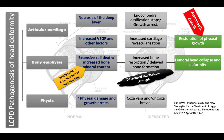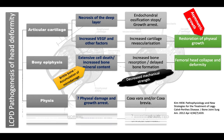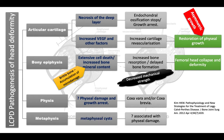At the level of the physis: due to insufficiency in the blood supply, there will be physeal damage and growth arrest, causing coxa vara and coxa brevia. At the metaphysis, there are metaphyseal cysts whose exact pathogenesis is not known but are associated with physeal damage. Femoral head deformity is therefore a combination of femoral head collapse and structural weakness, plus asymmetric growth on the articular side and physeal damage.